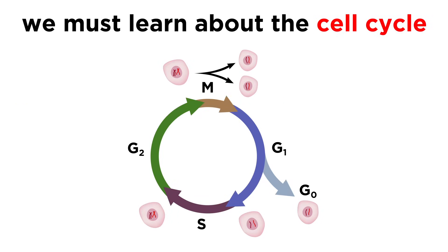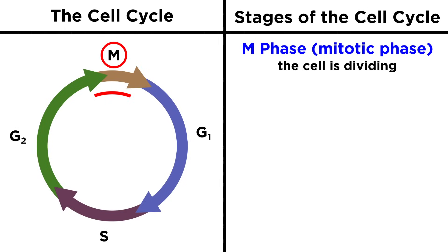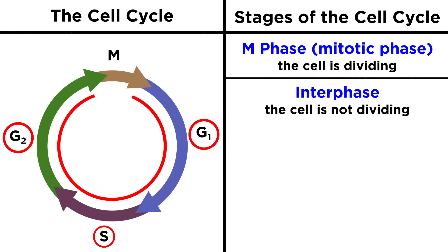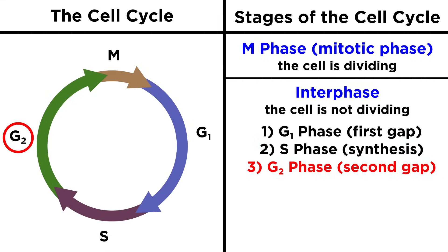Let's examine the different stages of the cell cycle. Although cells do divide, most of the time they are not dividing — they're just being cells. The time that a cell spends dividing is called the M phase, or mitotic phase, and the time spent not dividing is called the interphase, or the phase in between divisions. The interphase is comprised of three subphases: the G1 phase, or first gap; the S phase, or synthesis, when the genome gets copied; and the G2 phase, or second gap.